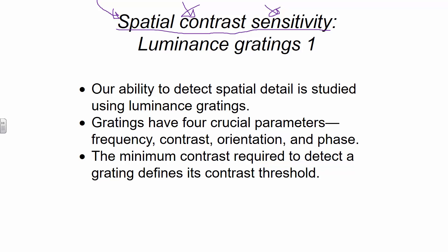Or we can ask the reverse question: given a certain contrast, how many objects can you clearly resolve as separate objects in your visual space? They're really inverted questions. To study this, we want to use a very controllable stimulus. In this case, we're going to use something called a luminance grating. We're going to see how good you are at detecting spatial detail. We'll use these luminance gratings, which have four parameters.